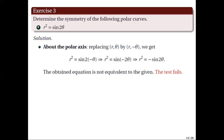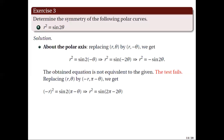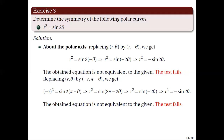Using the second test for symmetry about the polar axis, by making the following replacement, we get negative r quantity squared equal to sine 2 of the quantity pi minus theta. This is equivalent to r squared equal to sine of the quantity 2 pi minus 2 theta, and this is equivalent to r squared equal to sine of negative 2 theta, since sine is a periodic function. Using the property that sine is an odd function, we get r squared equal to negative sine 2 theta. Again, the obtained equation is not equivalent to the given, hence the test fails. Therefore, no conclusion can be made regarding symmetry about the polar axis.